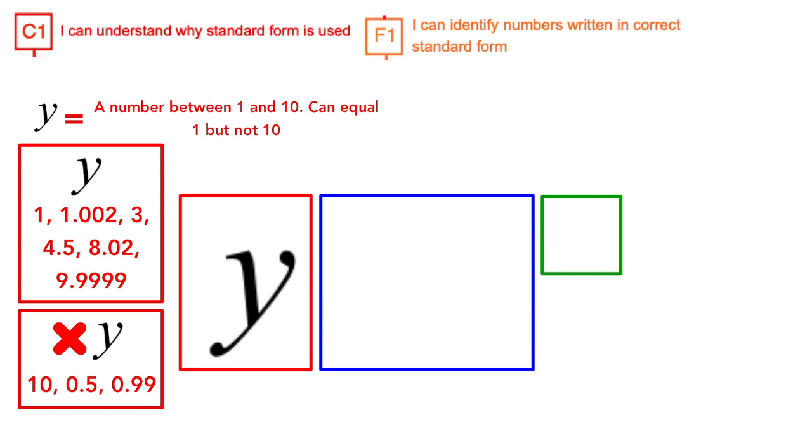The second part of standard form is the first number is multiplied by 10. So not multiplied by 2 or 5 or any other number that is not 10, not even negative numbers. The last part of standard form is the power of the 10 has to be an integer.